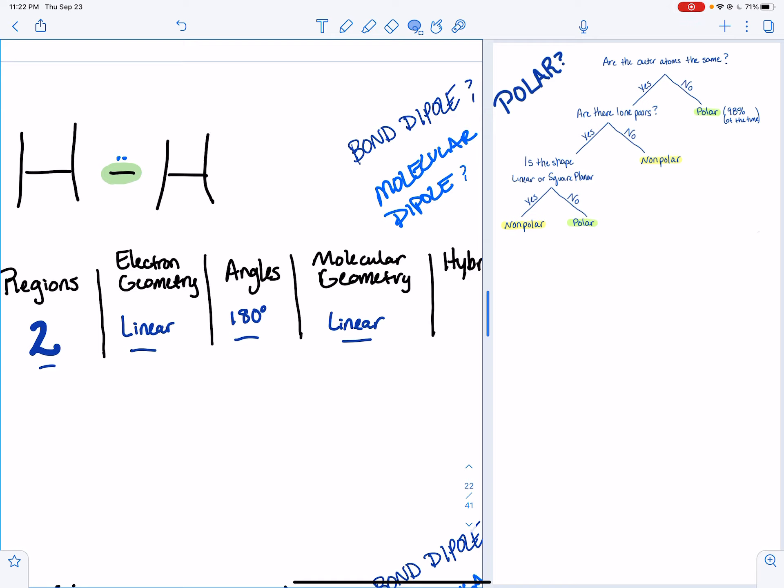And so then we're going to head over to are there lone pairs? Nope, there's no lone pairs. And then is the shape linear or square planar? Yeah, it's a linear shape. So that'll be like following the flow chart that's nonpolar.